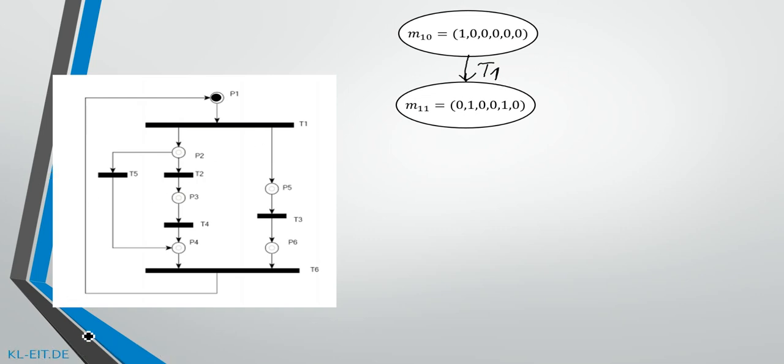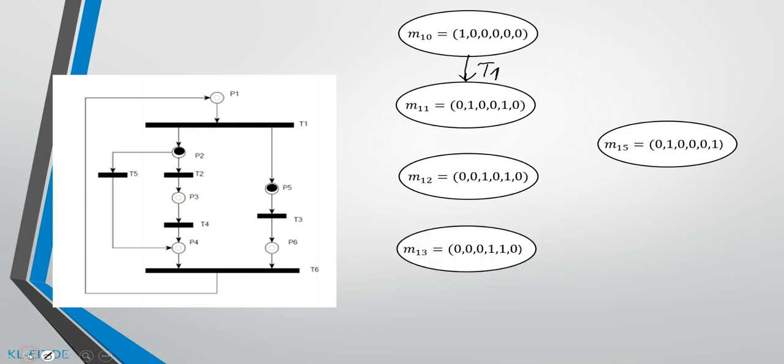By going further to the next marking, we will notice that here are three possible transitions, and so we have to build three new bubbles in our reachability graph. I activate all three of them now and explain them.